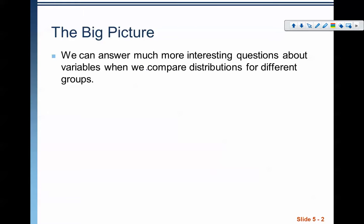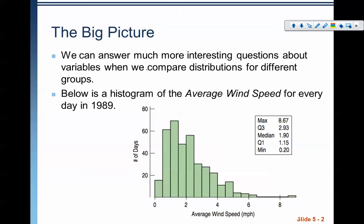We can answer much more interesting questions about variables when we compare two different distributions of the same groups. So for example, what we have here is the average wind speed for every day in 1989. This is collecting every single average wind speed from a particular location all year long. And this is an interesting graph because it tells us that the average wind speed is a graph that is skewed to the right. We can kind of see the tail there.